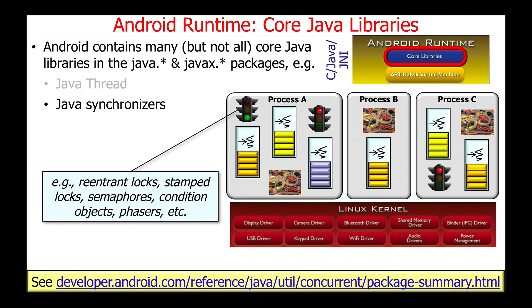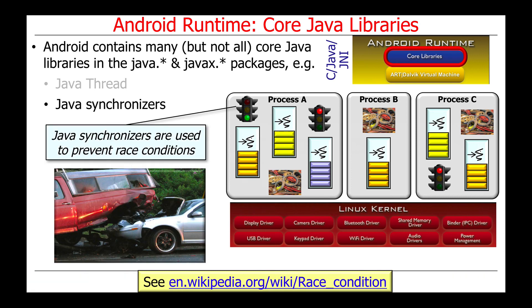There's also a whole collection of Java synchronizers, including things like reentrant locks, stamp locks, semaphores, condition objects, and phasers, which we'll cover more in next semester's course. These synchronizers are used for a variety of purposes. Most commonly, they're used to prevent race conditions, where there's corruption of data by different threads accessing data in a shared way using shared mutable state.